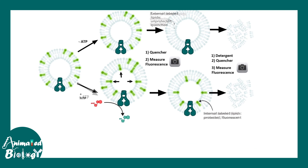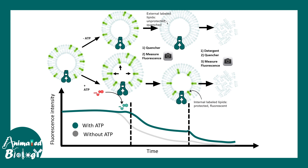Looking at the graph, initially there is significant fluorescence in both vesicle populations, because the labeled lipids are incorporated on the outside of the membrane — whether in the ATP-present or ATP-negative solution, labeled lipids are on the outer side of the vesicle. After ATP is given, flippase moves lipids inside. When the quencher is added from outside, the without-ATP condition shows a dramatic dip in fluorescence, seen in the gray line. But the dip is less dramatic in the green line where ATP was provided, because things moved inside. This tells us how simple assays can be used to look at the activity of ABC transporters.